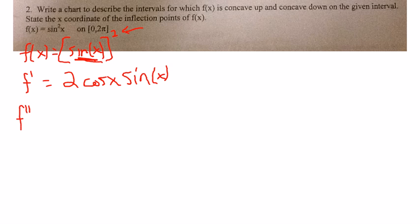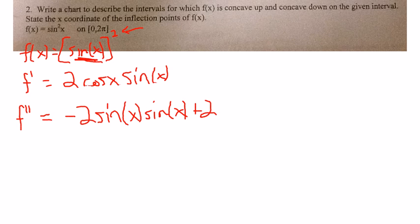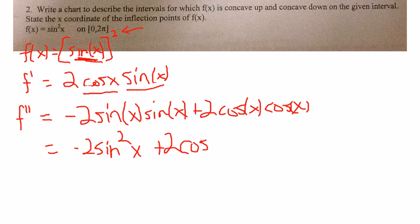To find f double prime, I need to use product rule. So I'll actually show this work out. I get 2 times the derivative of the first. The derivative of cosine is minus sine times the second, so the second is just sine of x. And then I'm going to do the derivative of the second times the first. So I get plus 2 times the derivative of the second, derivative of sine is cosine, and then the first is cosine as well. So when I simplify this, I get minus 2 sine squared x plus 2 cosine squared x.